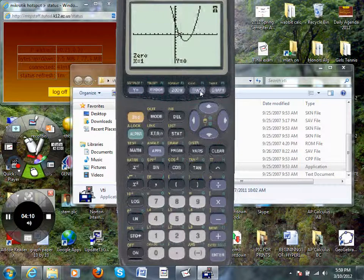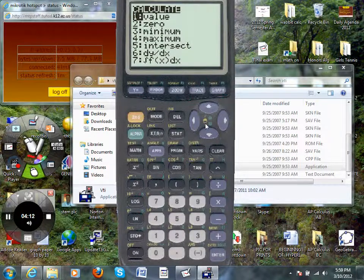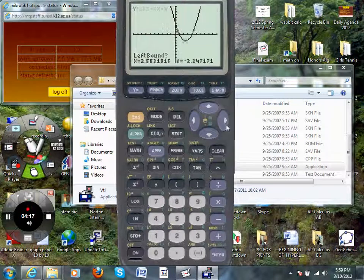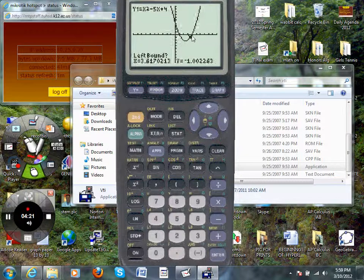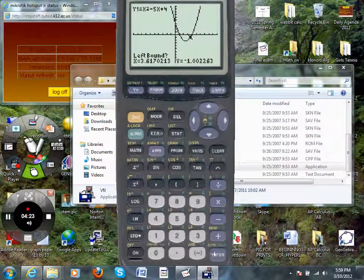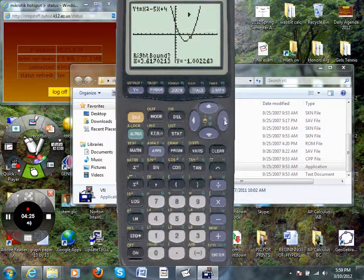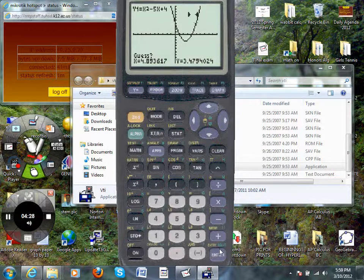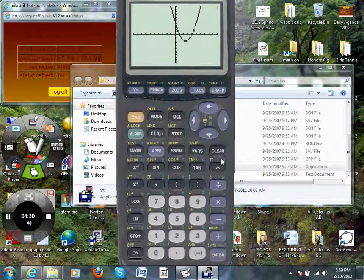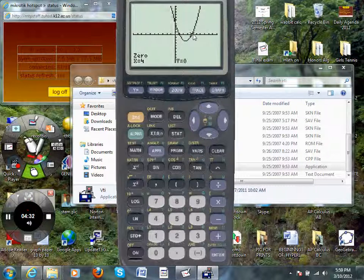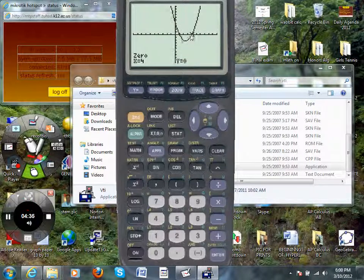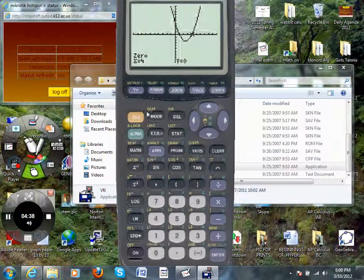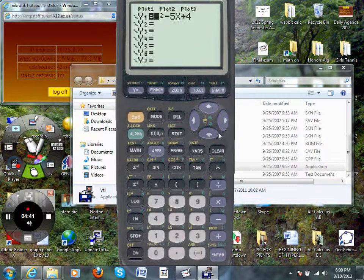So then I do second, trace again, which is actually calculate. And then I go zero. And then I move it to the other spot where it touches the x axis. Just make sure it's to the left side of it. So it is. It's still to the left side of it. Press enter. Move it to the right side. Press enter. I want it to guess. It tells me the other zero is right at 4. Again, you totally could tell that it crossed at 1 and 4. Sometimes we can't tell exactly. So we have the calculator calculate it for us. Does that make some sense?